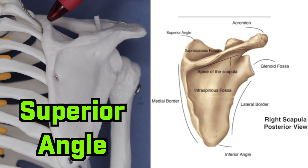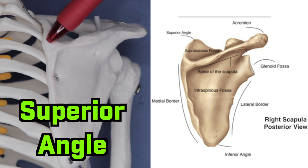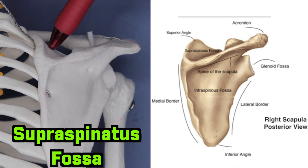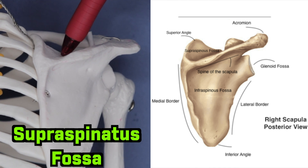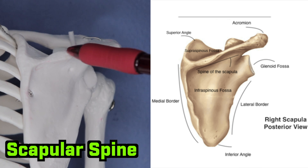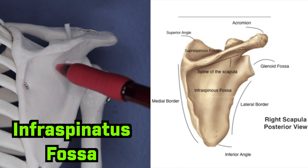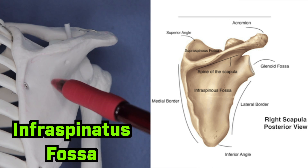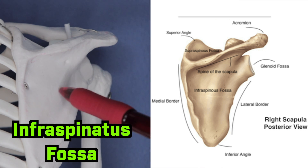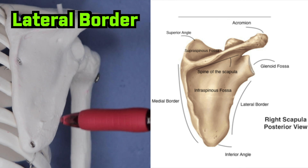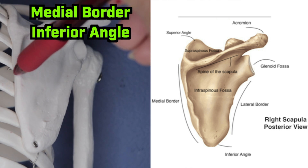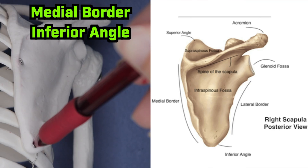The superior medial tip of the scapula is known as the superior angle. In this space next to the superior angle, we have the supraspinatus fossa, which is where your supraspinatus originates. This ridge that runs medial to lateral is known as the scapular spine, and right below it we have the origin for the infraspinatus, which is the infraspinatus fossa. Lastly, we have the lateral border, the medial border of the scapula, and the inferior angle.